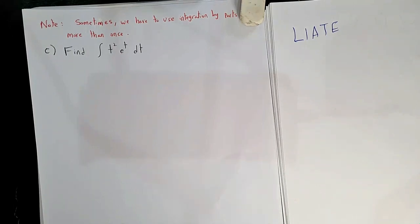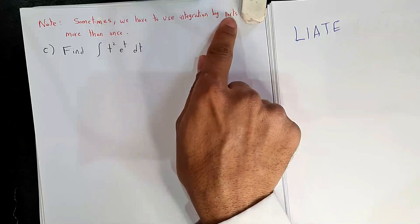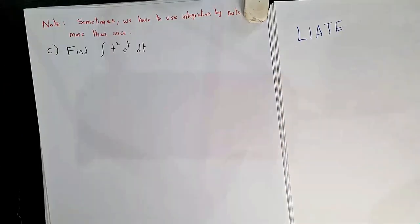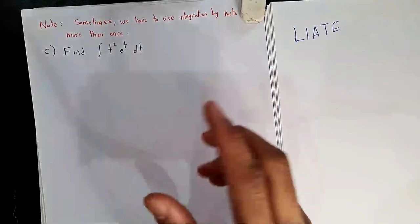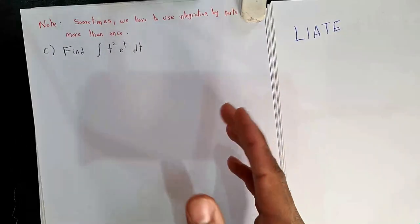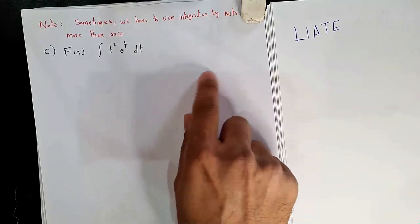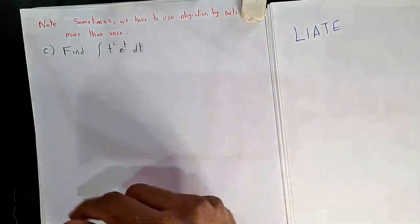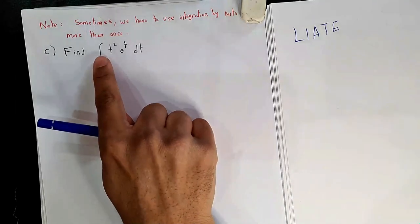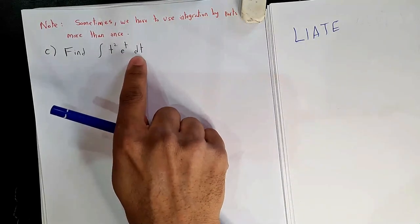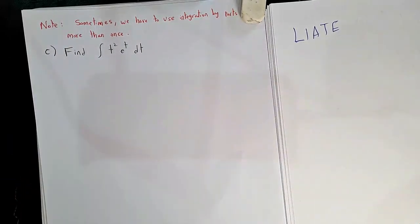Note: sometimes we have to use integration by parts more than once. We will end up with a new integral that needs integration by parts again. An example is ∫t² eᵗ dt. This is again a famous example — polynomial times exponential function.